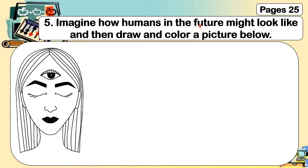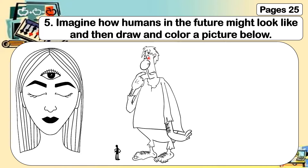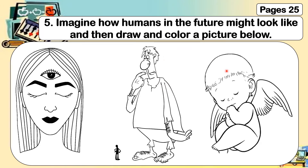Another example is: in the future, humans might look small and another one is tall, big, or a giant human. And the last one is, humans or babies can have wings. You can draw a person having a third eye, a small or big human, a baby having wings, a person with two heads, or a human having two or three arms.